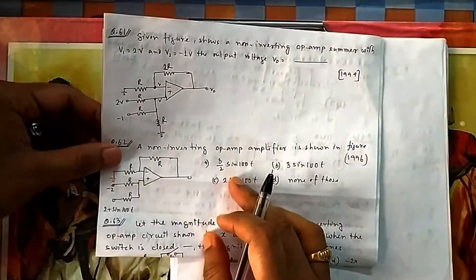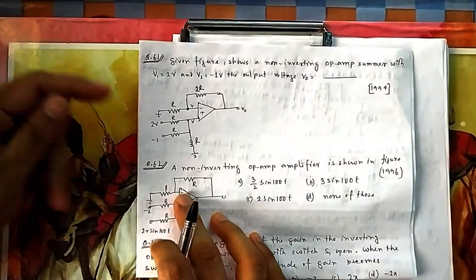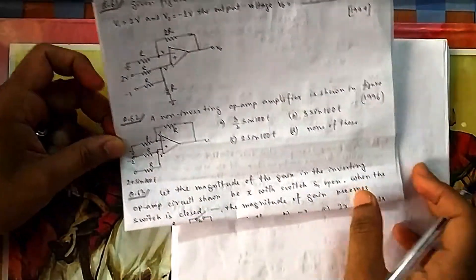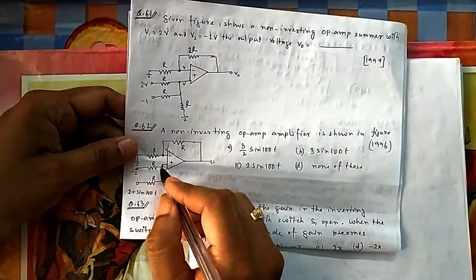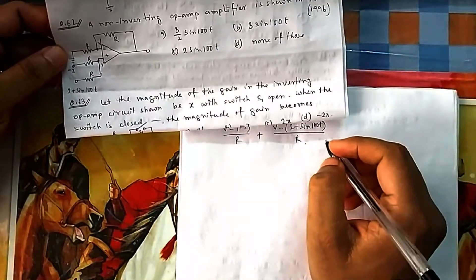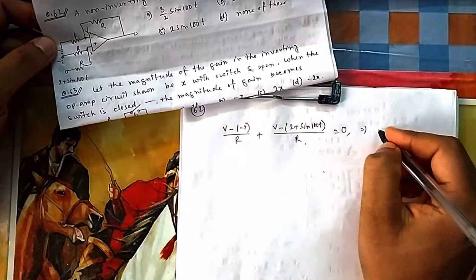In question 62, a non-inverting op-amp amplifier is shown. Negative feedback is connected to the minus terminal, which is grounded. We take nodal at V+ and assume this voltage to be V. The outgoing currents are: (V − 2)/R and (V − (2 + sin100t))/R, summing to zero.